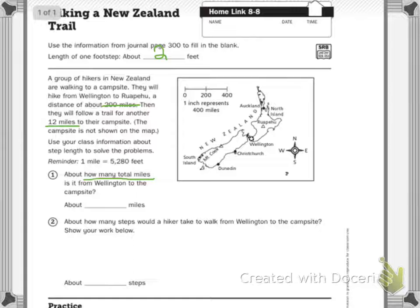Then it says: about how many steps would a hiker take to walk from Wellington to the campsite? Show your work. You're going to take your total miles answer and divide it by your footstep length. Miss DeBoer's answer is in orange — she would divide by two since her footstep is two feet. Yours is going to be different.